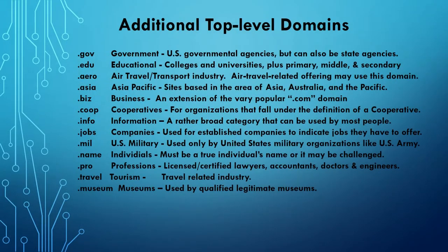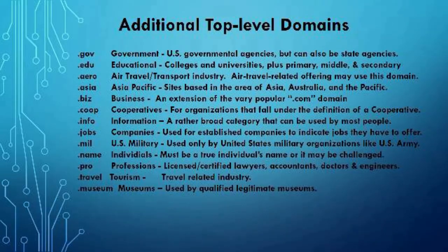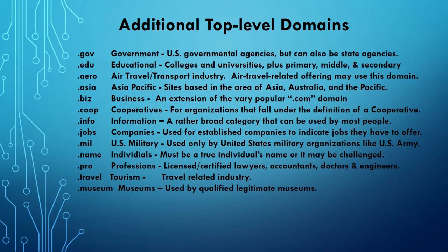A recent count shows there are 664 million active websites out there, and we're running out of dot coms, dot orgs, and dot nets. So in 2005 they decided to add more top-level domains. Here are a few examples: dot gov for government, dot edu for education, dot Asia, dot biz, dot co-op, dot info, dot jobs, dot mil for the US military, dot name for individual names, dot pro for professionals, dot travel, dot museum, and surely more to come.